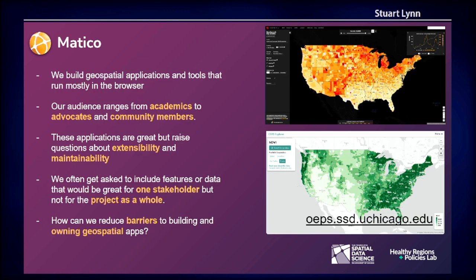We tend to produce a lot of dashboards and applications for our partners, who tend to be academics, advocates, and community members all trying to make an impact on things like the opioid crisis in the States and the COVID response. We often build these out in a way that's very cheap and easy to run, simply because we need to provide our partners something that's maintainable, extensible, and is not going to cost them long term.